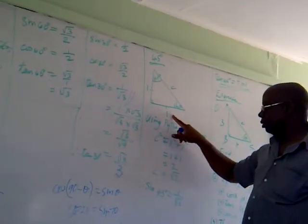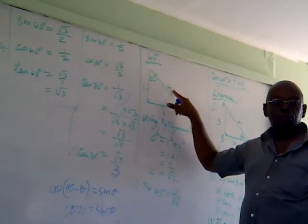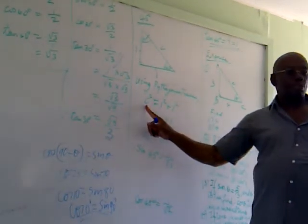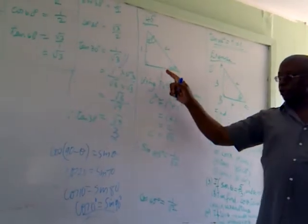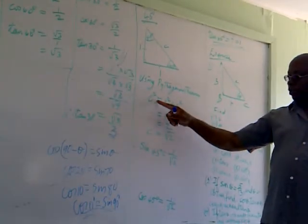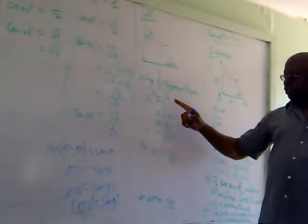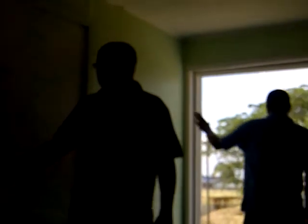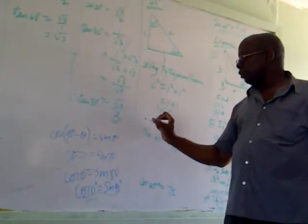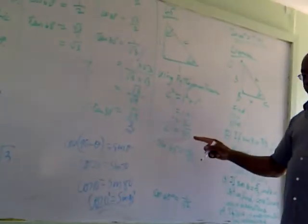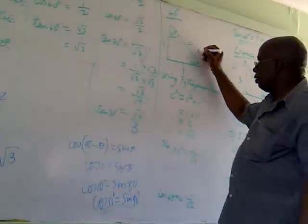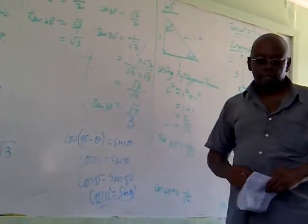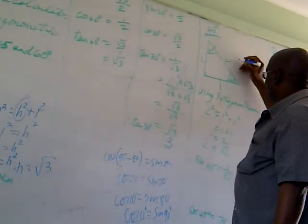If we call the two equal sides 1 and 1, then we can find the hypotenuse using Pythagoras' theorem, which states that the square of the hypotenuse is equal to the sum of the squares of the other two sides. So C squared equals 1 squared plus 1 squared, which gives us 1 plus 1 equals 2. Therefore C is the square root of 2.